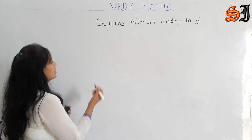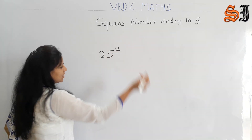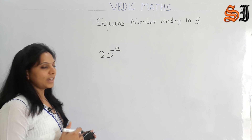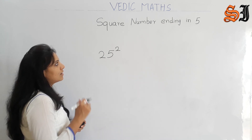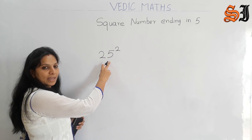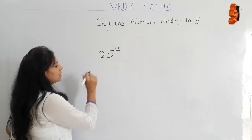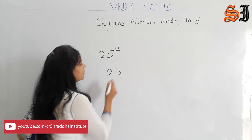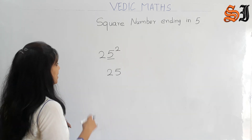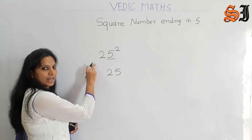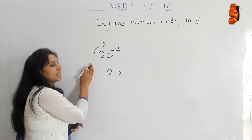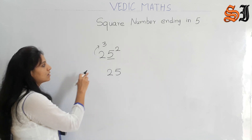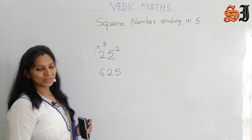Suppose 25 squared — you already know the answer is 625. For a square number ending in 5, we apply this method: 5 squared is 25, so we write 25. Then the first number is 2, and the next number is 3. So 2 into 3 is 6, giving us 625. That is 25 squared.